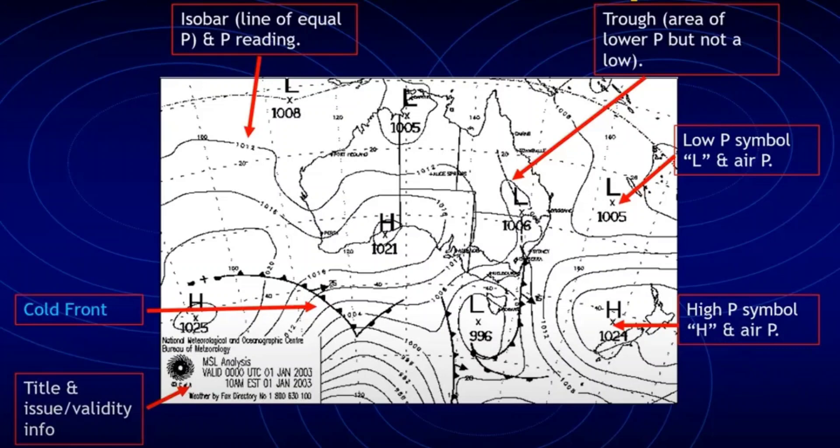Then we have the trough. It is elongated region of relatively low atmospheric pressure without a closed isobaric contour that would define it as a low pressure area.